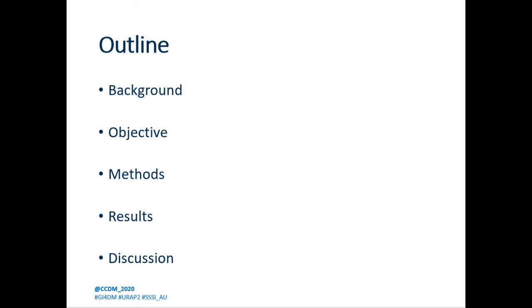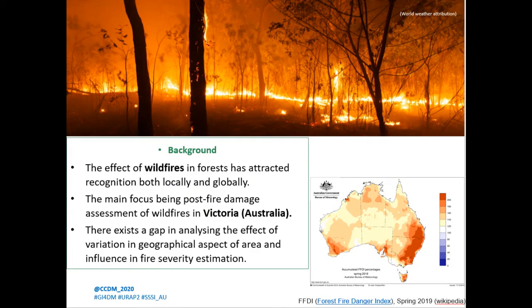The effects of wildfire have attracted a lot of recognition both globally and locally, especially because of increased fires in Australia over the years. There have been many studies done in Australia focusing on the factors influencing the spread of wildfires and how to mitigate them. However, few have examined how variation in the geographical aspects of an area and the type of tree structure influence fire severity estimation.